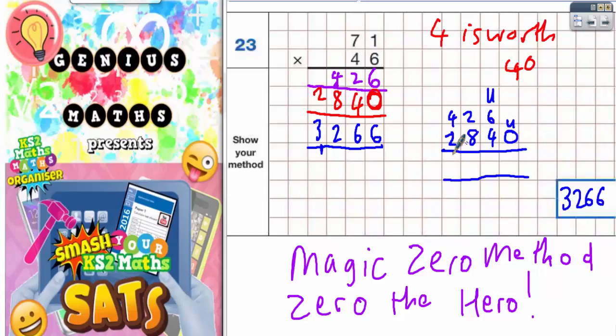The 284 and the 0 need to all be moved along one space so that the 8 is underneath the 4, the 4 is under the 2, and the 0 is under the 6. If you forget to put the magic zero in, you can't just put it in on the end. You've got to rub this number out, put it in first, and then the number needs to go in front of that, otherwise you will get the wrong answer.